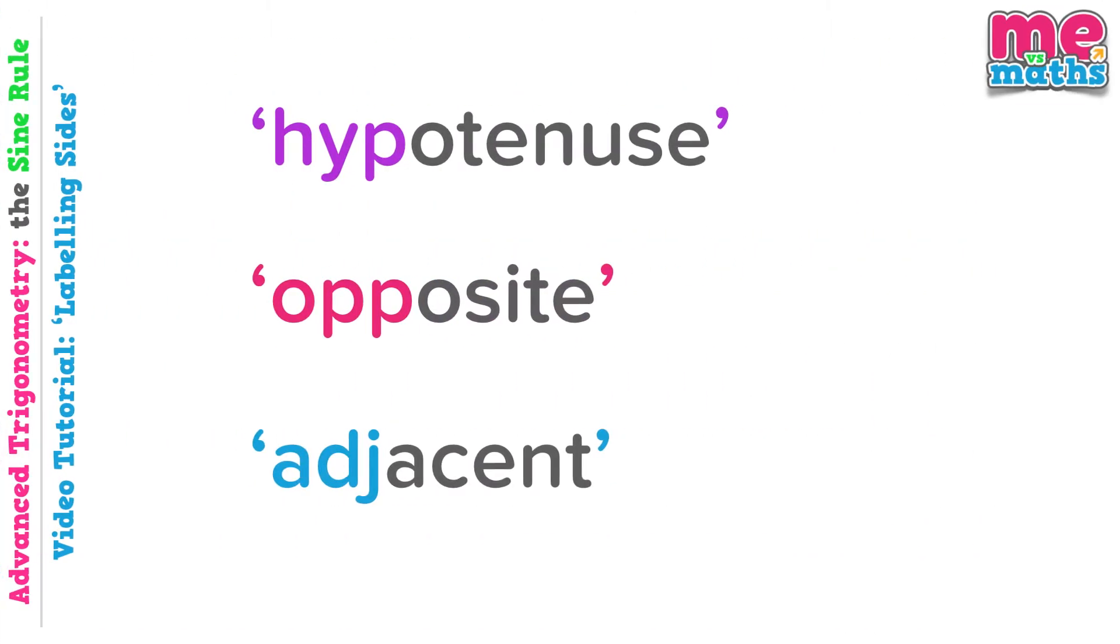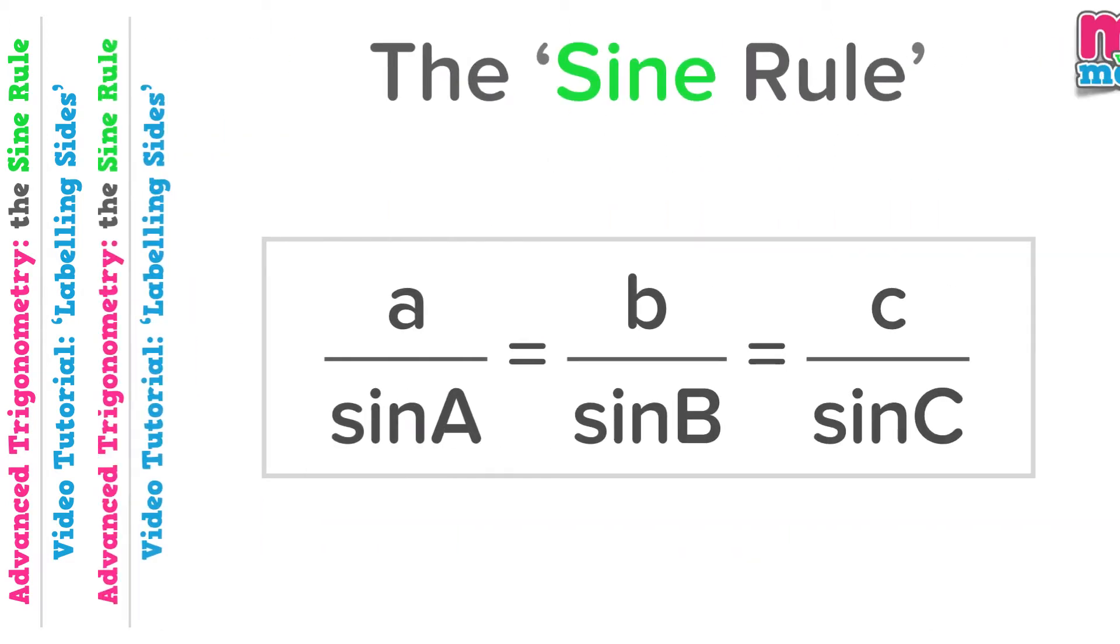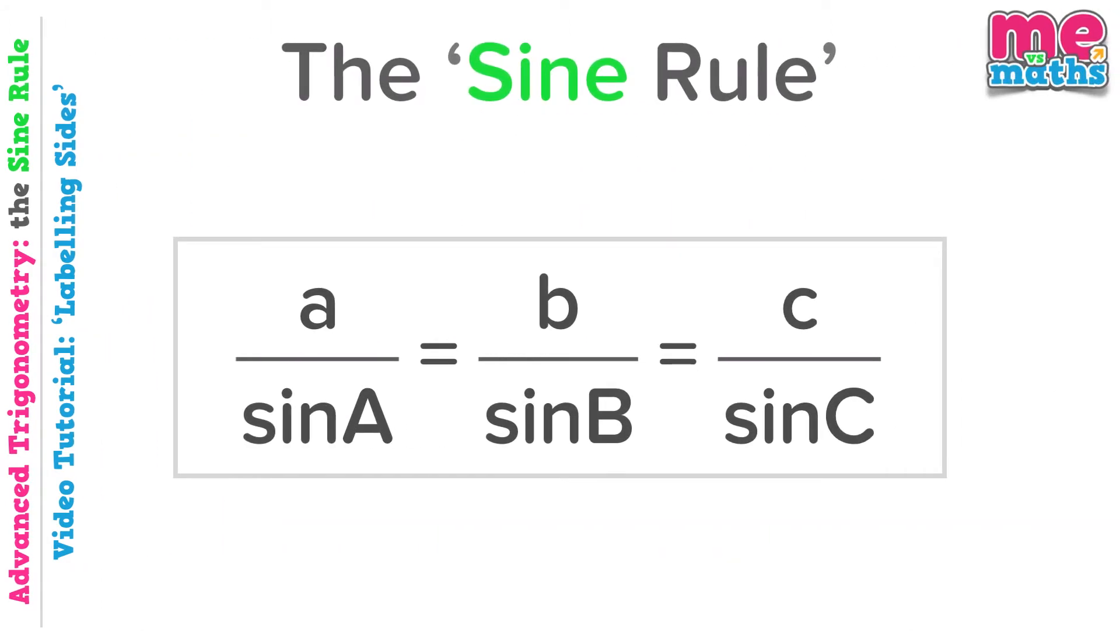If you've done some trigonometry before with right angle triangles, then you should be familiar with these terms and what they mean. But if we look at what's called the sine rule, you'll notice there doesn't seem to be any sign of the hypotenuse or the opposite. You may think you can spot the adjacent, but actually the A's in this rule stand for something else.